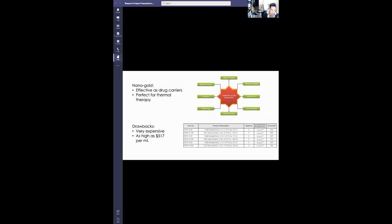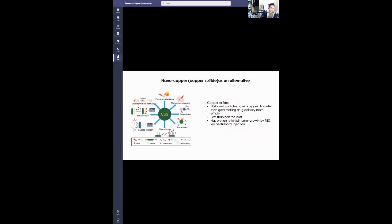Nanogold was considered as a possibility to improve chemotherapy due to being effective as drug carriers. Nanogold presents an issue similar to the electronics industry, which is that it's expensive and won't be as accessible to your average patient. It could go from $205 all the way to $785 per milliliter. Here's where we present nanocopper as an alternative to nanogold in cancer therapy.